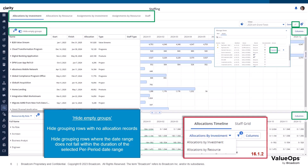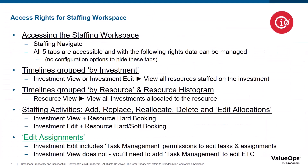As in previous releases, the last tabbed page visited by the user will be persisted the next time they go into the staffing workspace. Within each of the four timeline pages, the last position of the panel dividers is persisted per page per user. Existing access rights have not changed in this workspace — when a user is granted access to the staffing workspace, all five tabs are visible.